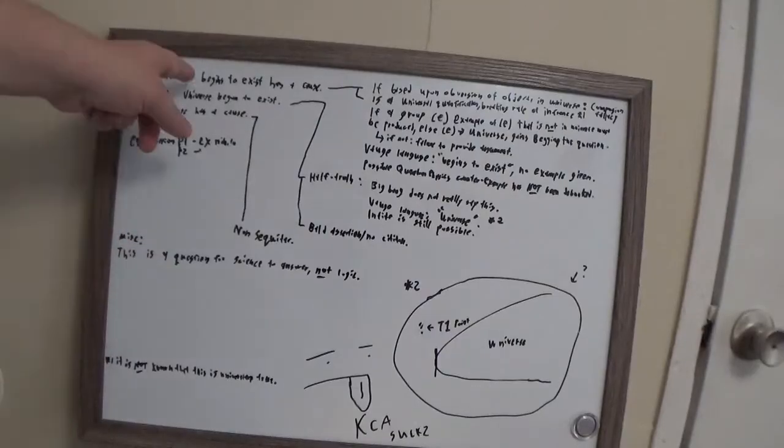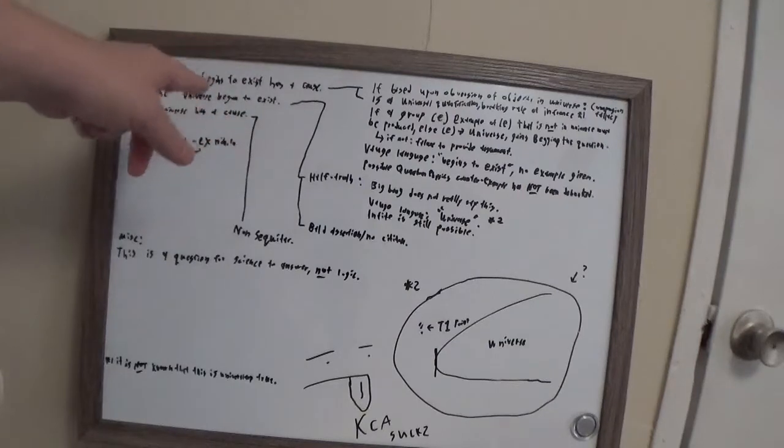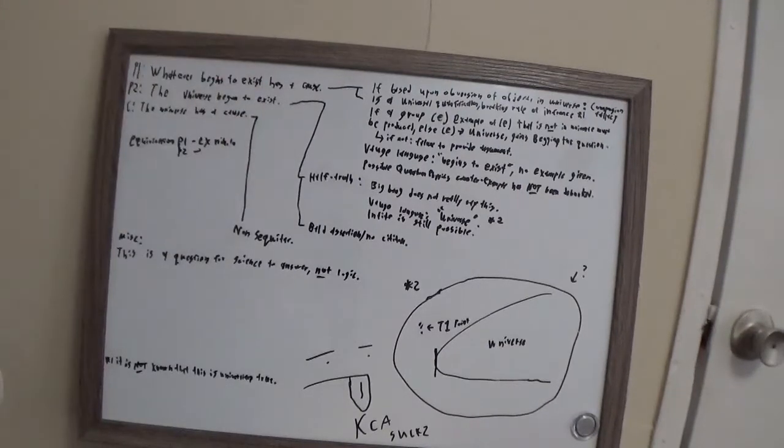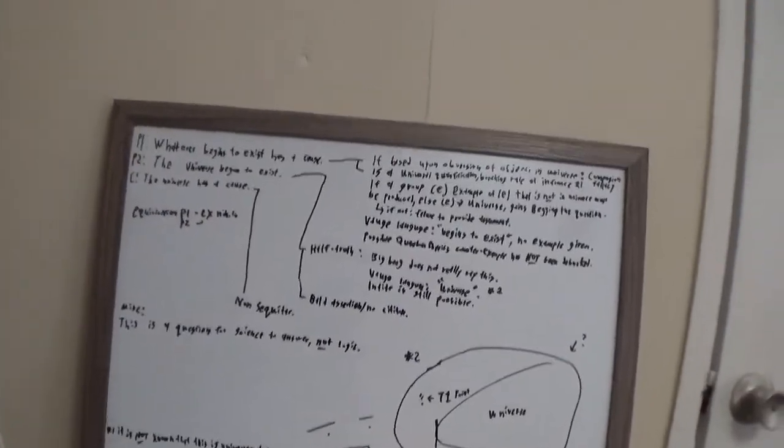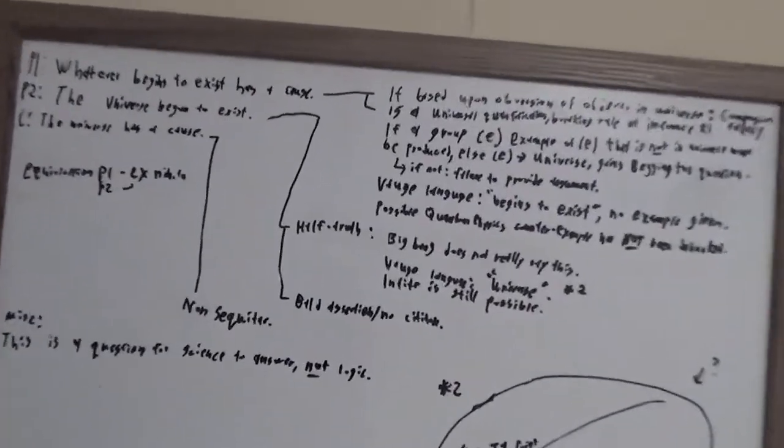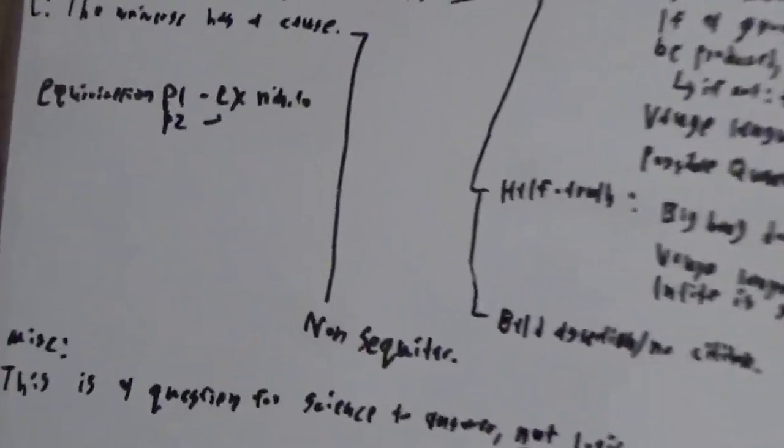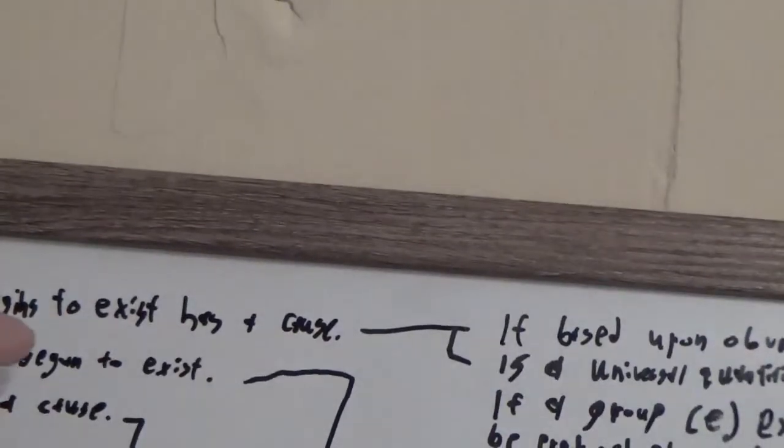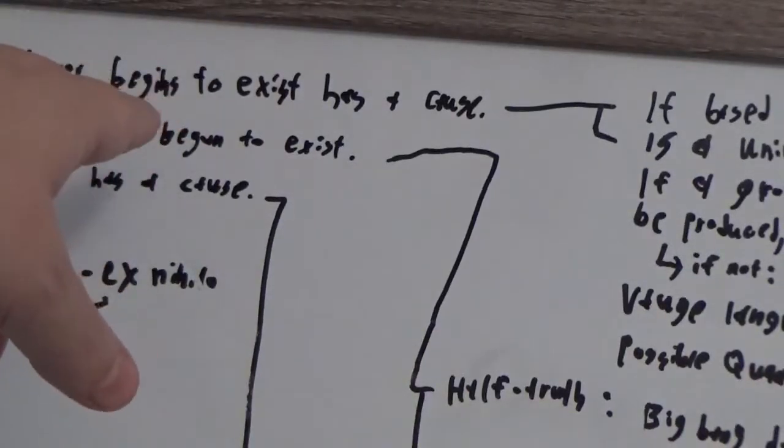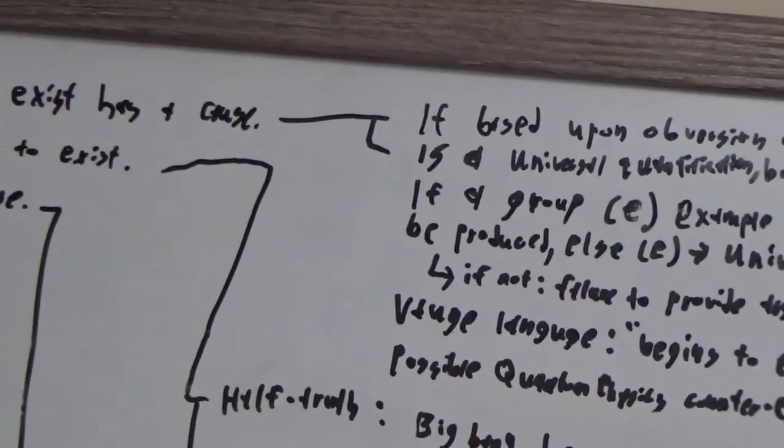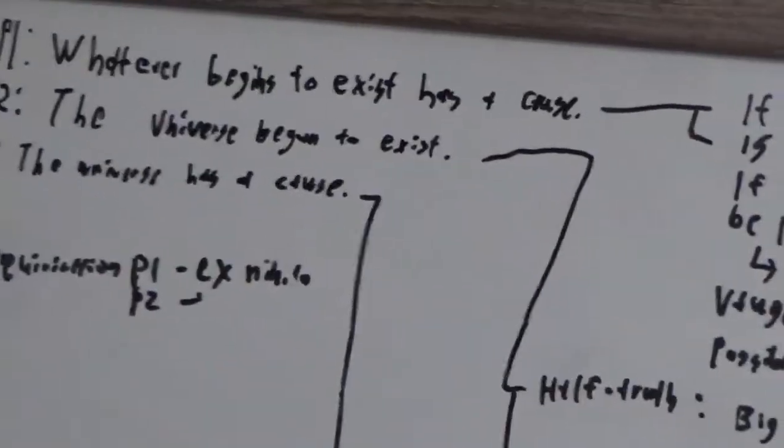Here's another problem. Begins to exist has a cause, universe begins to exist, but really, there's a hidden equivocation here if you're talking about certain types of gods and theology. Which is, you're talking about the universe beginning to exist ex nihilo, from nothing. But the other things, you're not.